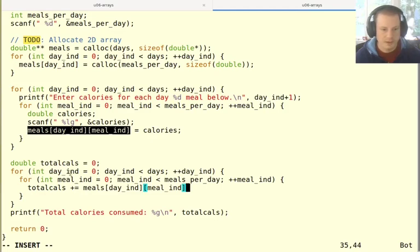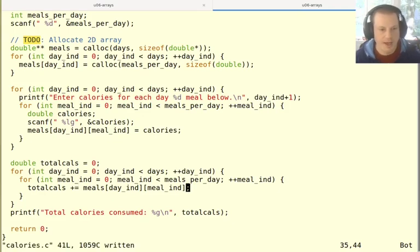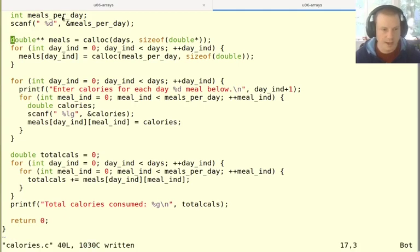What we're going to say is total cals plus equals, and then it's going to be this same exact syntax, meals with those two indexes. Of course, it depends on which variable names I use for the indices down here, but I use the same variable names. And so now this should actually work to do everything. So we allocated with a loop, then we have to read things in using this double index. And then we added up those calories using another nested for loop and a double index.